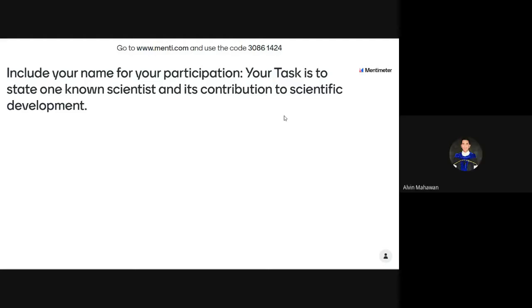Input the following codes as projected on the screen. Input 30861424. Now, your task first includes your name for your participation since these things are all recorded. Your task is to state one known scientist and its contribution to scientific development. Please do not Google. Just go back and retrieve your information, your previous knowledge. Who are those important persons whom you know contributed a lot in scientific development?